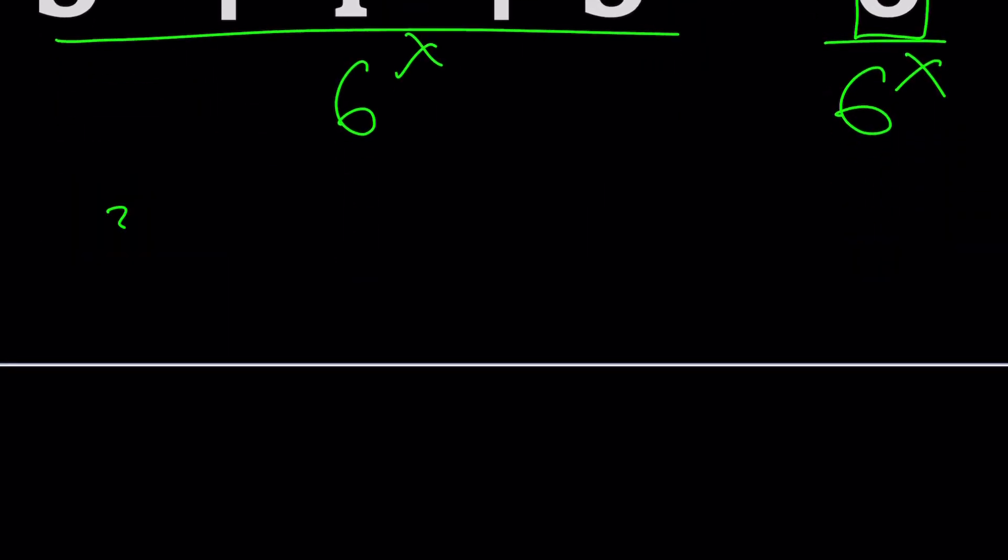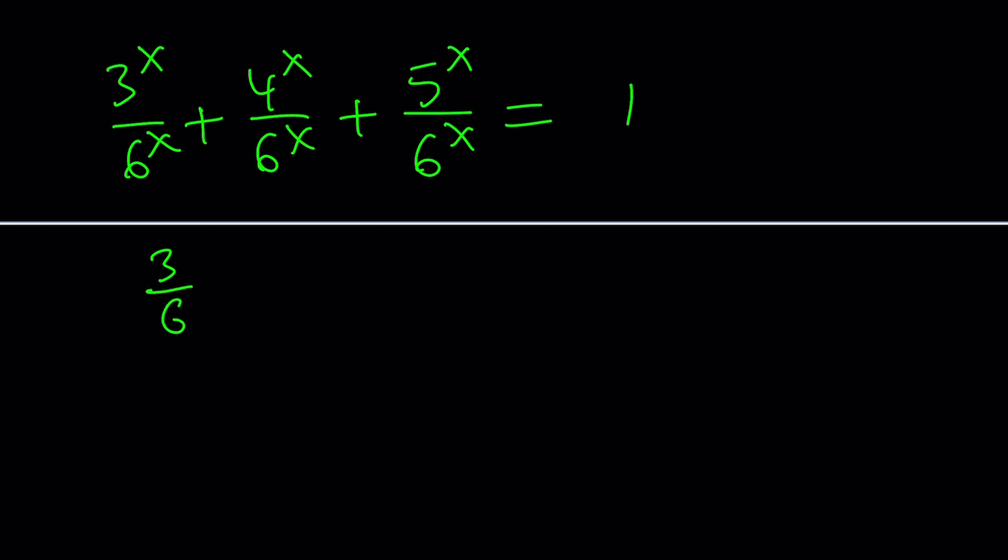Now, let's see what we get from here. We get 3 to the x divided by 6 to the x plus 4 to the x divided by 6 to the x, 6 to the power of x, and then 5 to the power of x divided by 6 to the power of x. And we have 1 on the right hand side, which is nice. Notice that the numerator and the denominator have the same exponent. So we can kind of write this as follows: 3 over 6 to the power x plus 4 over 6 to the power x plus 5 over 6 to the power x equals 1.